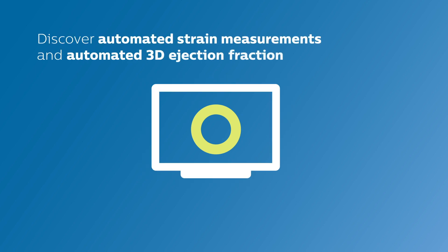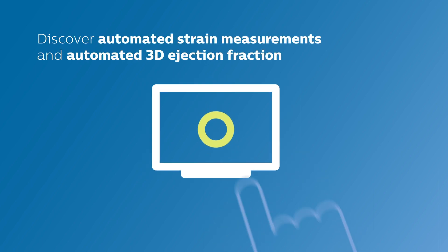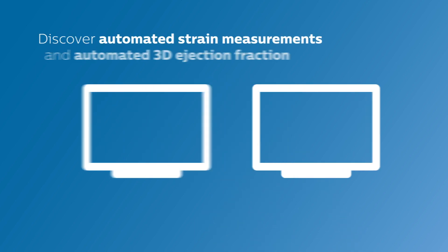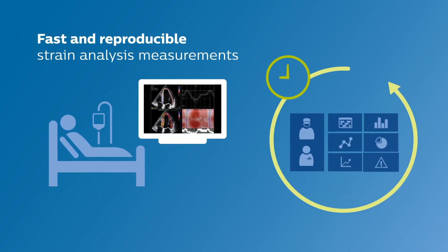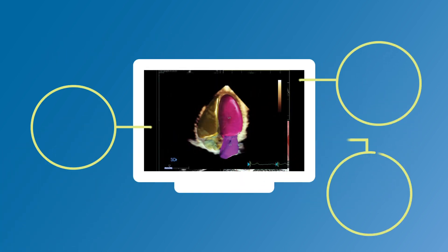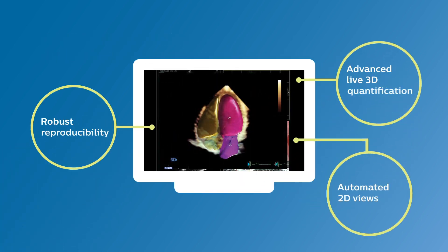Cardiac tools, available off-cart or on Philips ultrasound systems, can give you advanced insight into LV dysfunction at the push of a button to support you in diagnosing cardiotoxicity. Automated reproducible global longitudinal strain or 3D ejection fraction measurements in seconds.